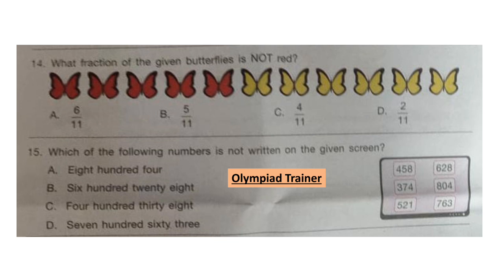Question 15: Which of the following numbers is not written on the given screen? Look at the options and find out the number which is not written on the given screen. The answer is 438 — it is not given on the screen.